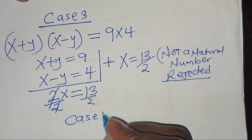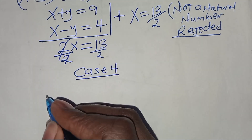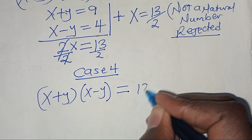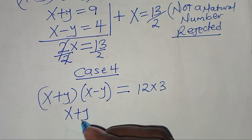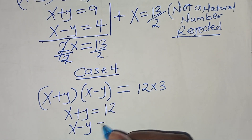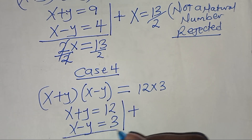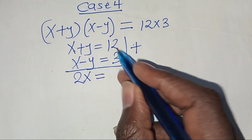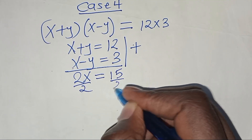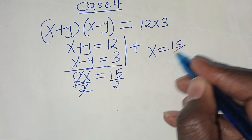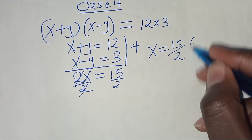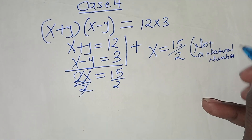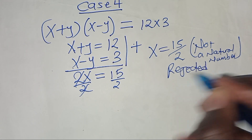Case 4: (x + y)(x - y) = 12 × 3, so x + y = 12 and x - y = 3. Adding gives 2x = 15, so x = 15/2. This is a fraction, not a natural number, so this solution is also rejected.